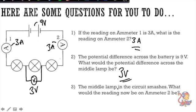And finally, the middle lamp in the circuit smashes, this one here. What would the reading now be on ammeter two? Well, if the lamp smashes, the circuit is broken, so the reading on ammeter two would be 0A because the current would not be able to flow.